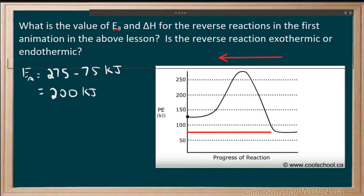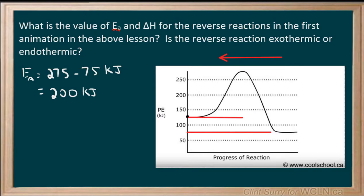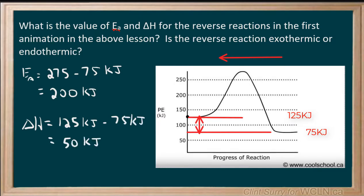To find the change in enthalpy for the reverse reaction, what we look at is where do we start and compare it to where we end. We start off this reaction at 75 kilojoules and we end the reaction at 125 kilojoules. To find the difference, we take where we end up minus where we start, so 125 minus 75, and that gives us a change in enthalpy of 50 kilojoules.